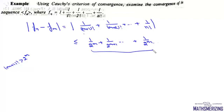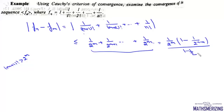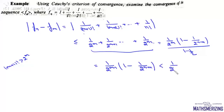This is a geometric progression. We can write the sum of this GP as 1 upon 2^m times (1 minus 1 upon 2^(n-m)), divided by (1 minus 1/2), which simplifies to less than 1 upon 2^(m-1). So this is less than epsilon.